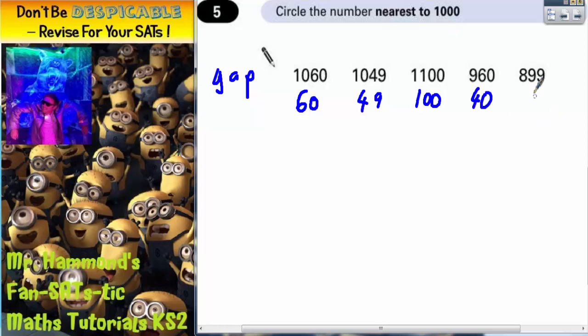And 899 is a gap of 101, because if you added on your 100, you'd get 999, then the extra 1 would make it up to 1000, so it's 101.